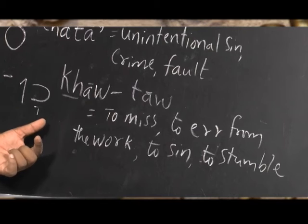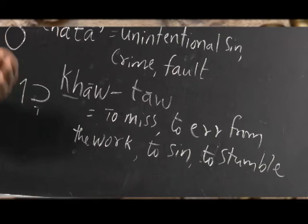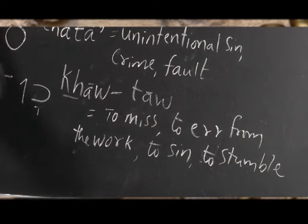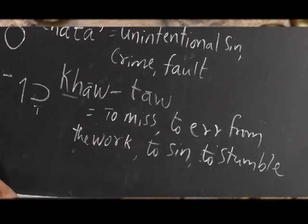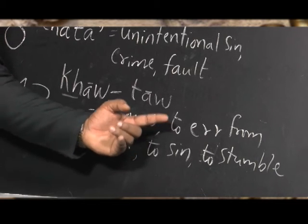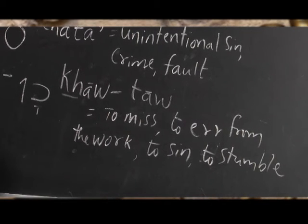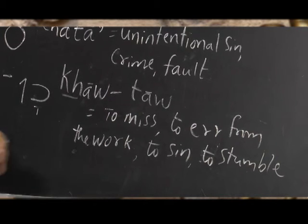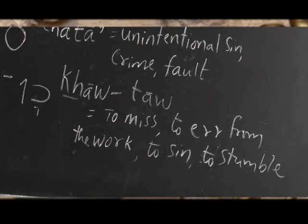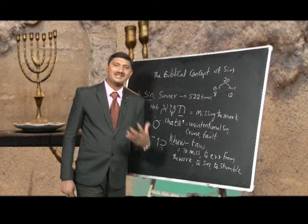Khaw-tau means: to miss, to miss the target, to miss the things which are set in front of you. It is to err from the work — the work that you are doing, you missed it. It also means to sin or to stumble.